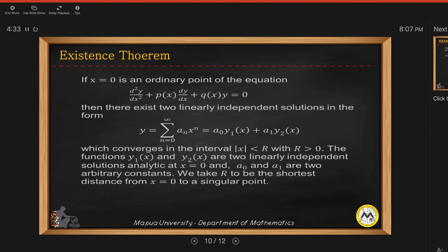Now for the existence theorem, if x sub 0 is an ordinary point of the equation in the standard form, then there exists two linearly independent solutions in the following form. So you can simplify the power series into sum of two functions. So remember that this is second order. So a sub 0 and a sub 1 will be considered as your two arbitrary constants. And then y sub 1 and y sub 2 are any functions associated with a sub 0 and a sub 1.